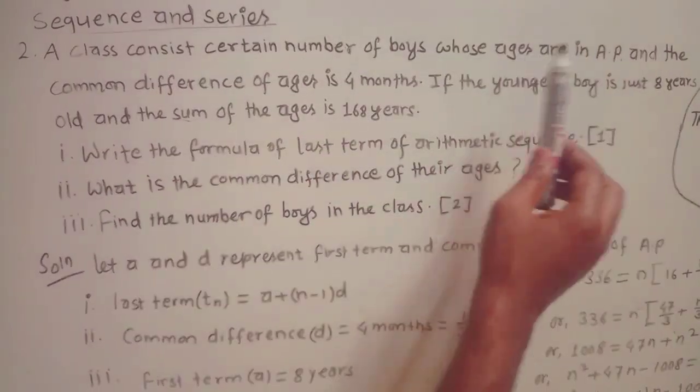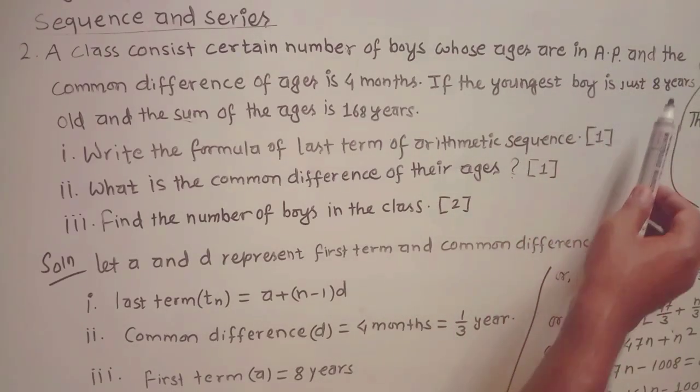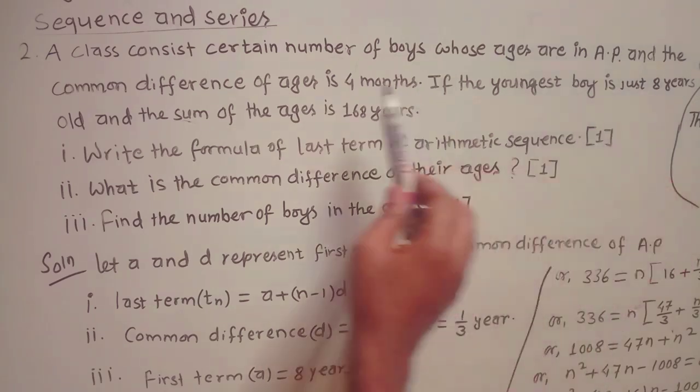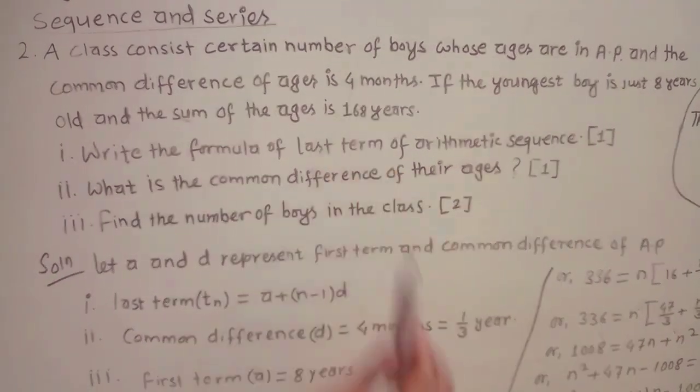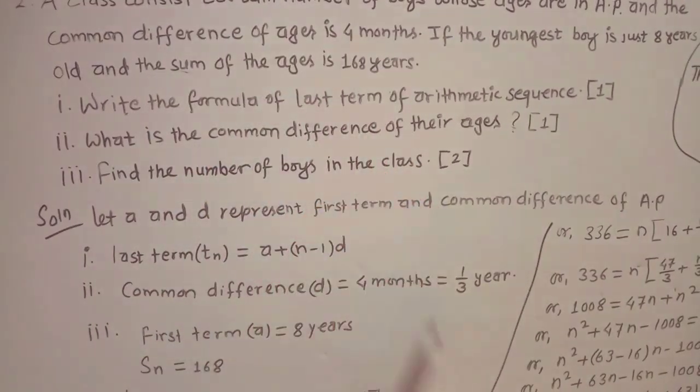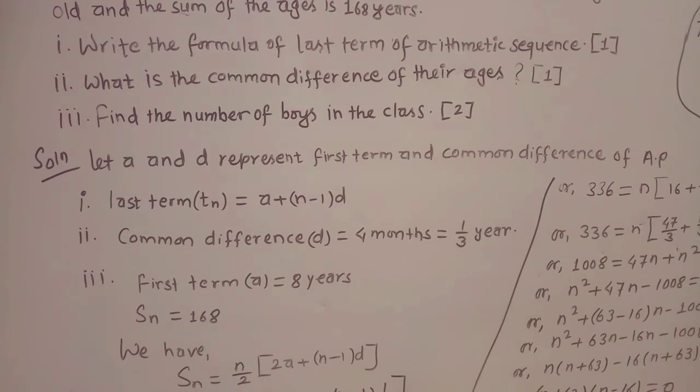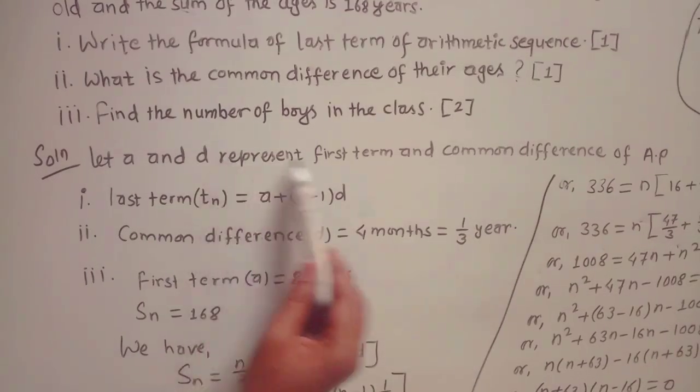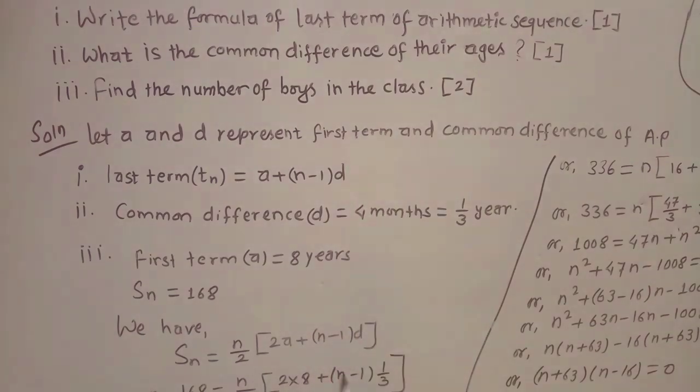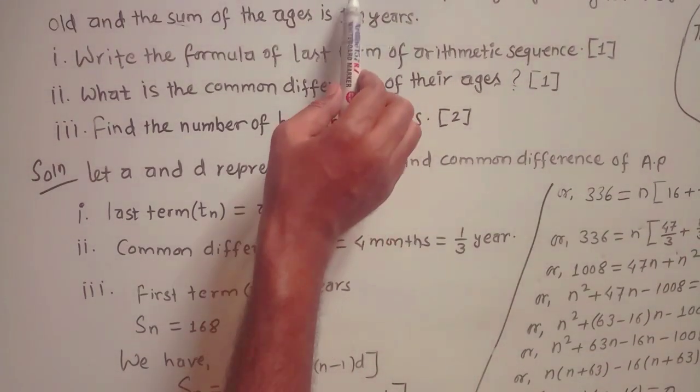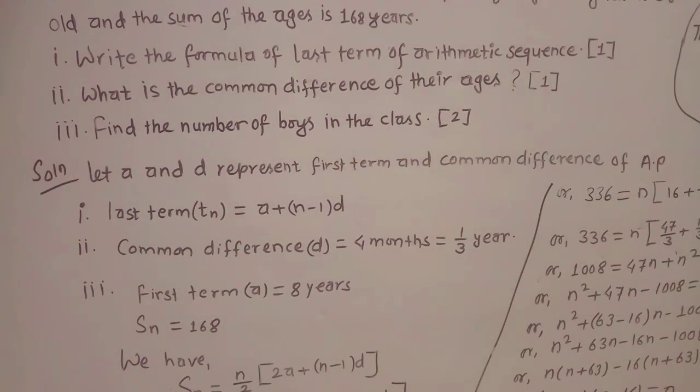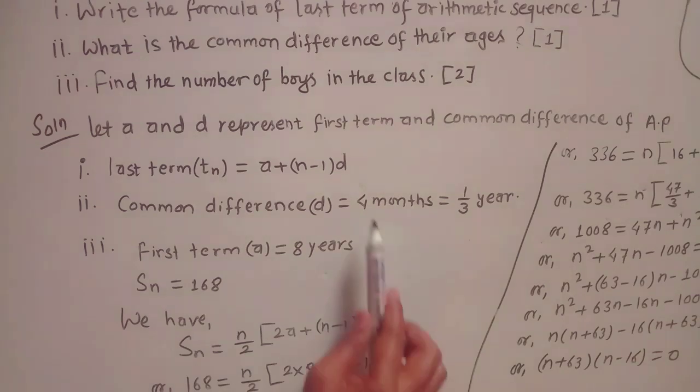This class ma boys haru ko age AP ma chha. The formula of last term of arithmetic sequence: tn equals to a plus (n-1) times d, where a is first term and d represents common difference of AP. This is the answer for (i). The common difference d equals to 4 months, which is 4 months divided by 12, equals to 1/3 year.